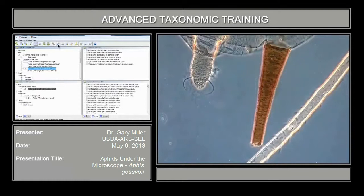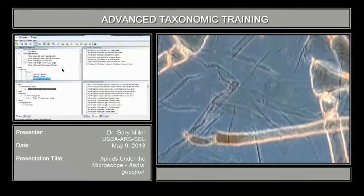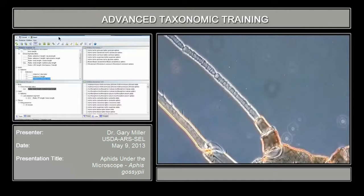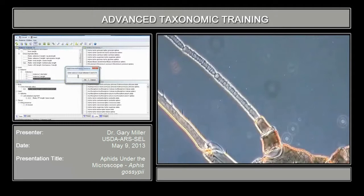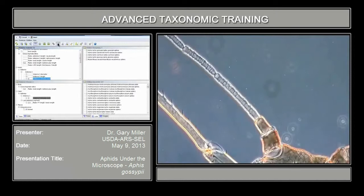The next feature is the antenna 3 rhinaria count. We're moving up to antenna segment 3 and looking for rhinaria — the sensoria — and these aren't present on antenna 3 of this specimen. They want us to enter a value between 0 and 9.75; obviously that's an average. We're going to say 0 — I don't see any.